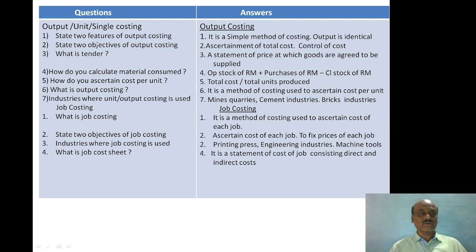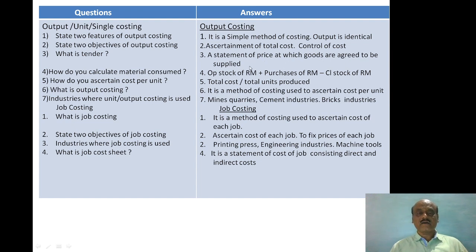Next question: state two objectives of output costing. First, ascertainment of total cost. Second, cost control. Then, what is tender? Tender is a statement of price at which goods are agreed to be supplied.